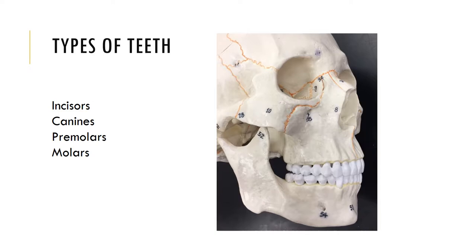Molars are flattened crowns with prominent ridges used for grinding and crushing, and typically possess three or more roots. We have twelve total — six on top and six on bottom — described as either first, second, or third molars. The third molars are sometimes called wisdom teeth.